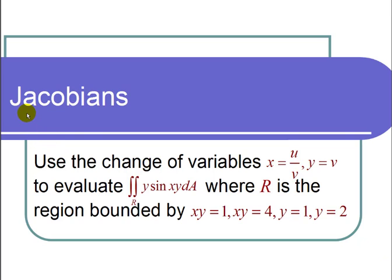This is a video on Jacobians. The question states, use the change of variables x equals u over v and y equals v to evaluate the double integral over r of y times the sine of xy dA, where r is the region bounded by xy equals 1, xy equals 4, y equals 1, and y equals 2.